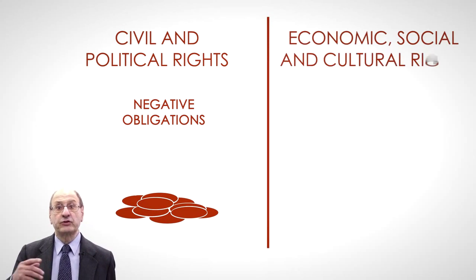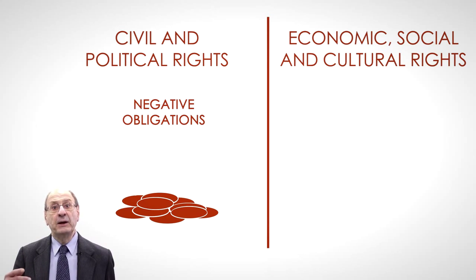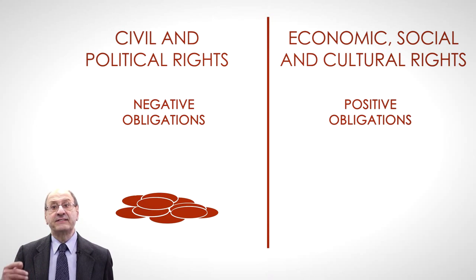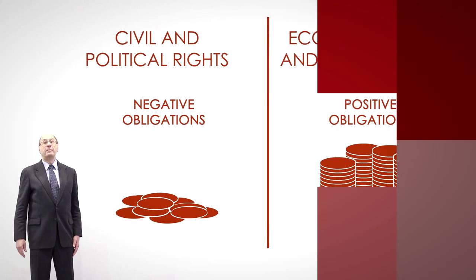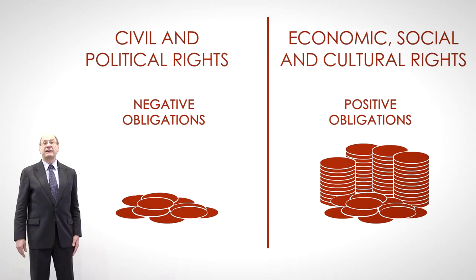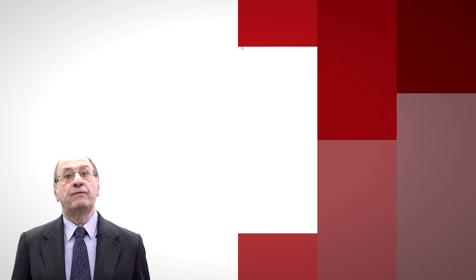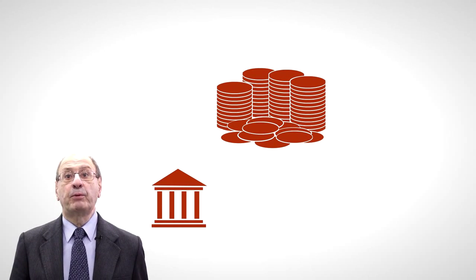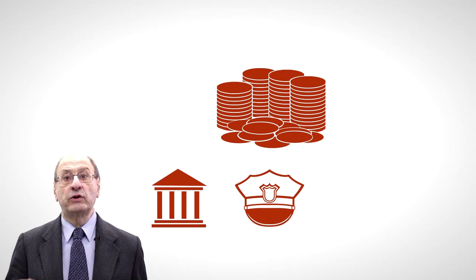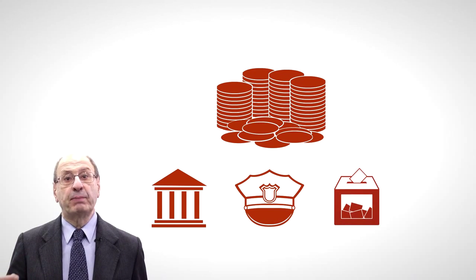On the contrary, economic, social and cultural rights would entail mainly positive obligations, for which it is necessary to allocate State economic resources. For many years now, most academics have come to reject this distinction as simplistic. Among other arguments, they point out that the protection of civil rights also implies considerable State expenses — for instance, it is necessary to pay for a well-endowed judiciary, for police bodies, and for public entities to organize and supervise electoral roles and public elections.